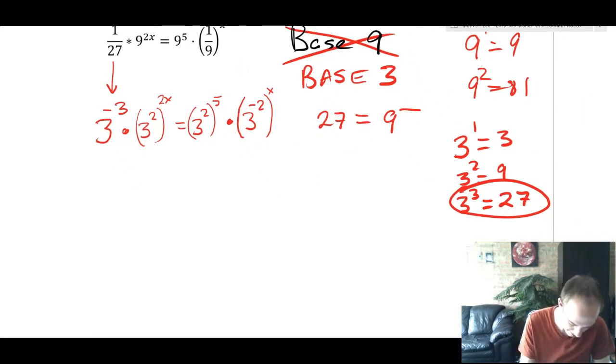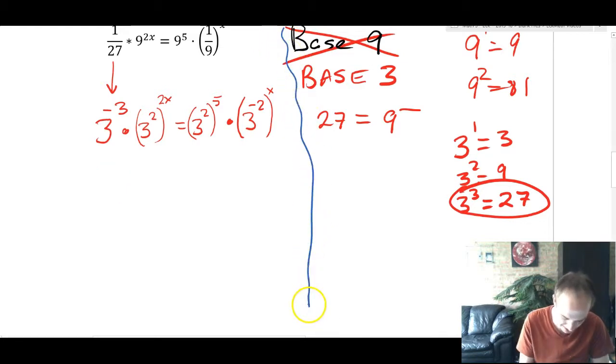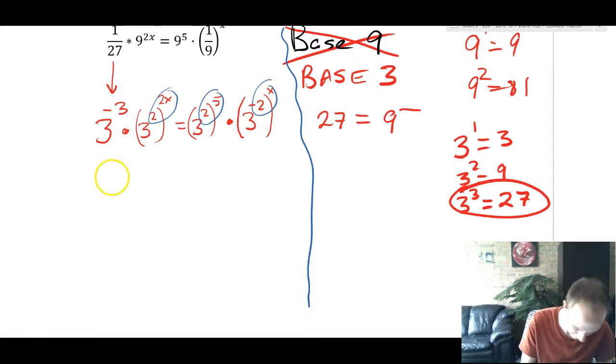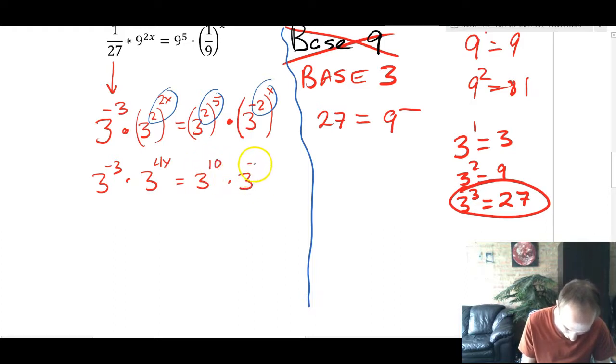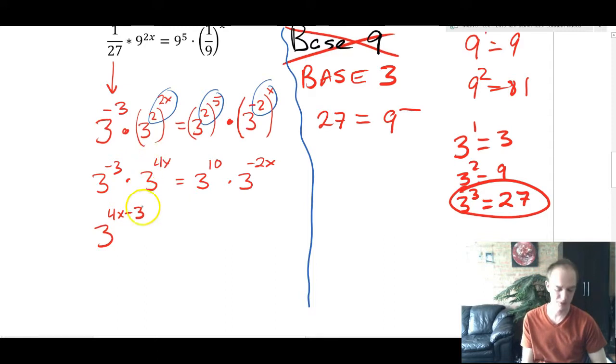Next step is going to be combining all of these terms in one before I combine anything with like bases. So we'll have 3^(-3) times 3^(4x) is equal to 3^10 times 3^(-2x). So I've just multiplied all of these things using that multiplying exponent rule. Now I'm going to combine everything because I have same bases here. So I'm going to do 3^(4x - 3). Combining these two. And I'm flipping the order just because it's more conventional.